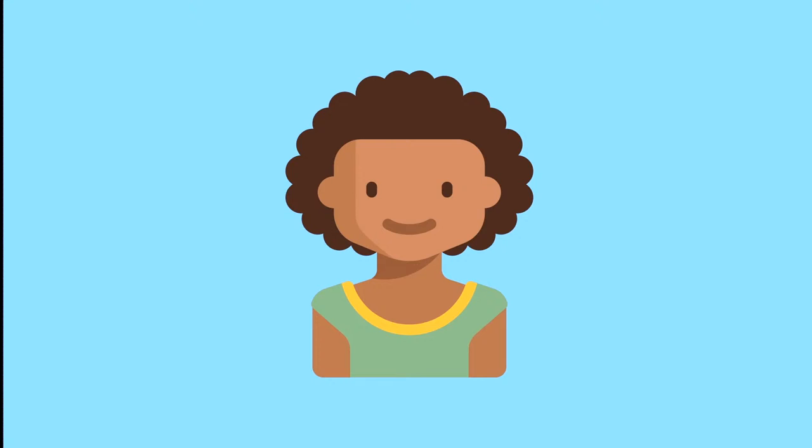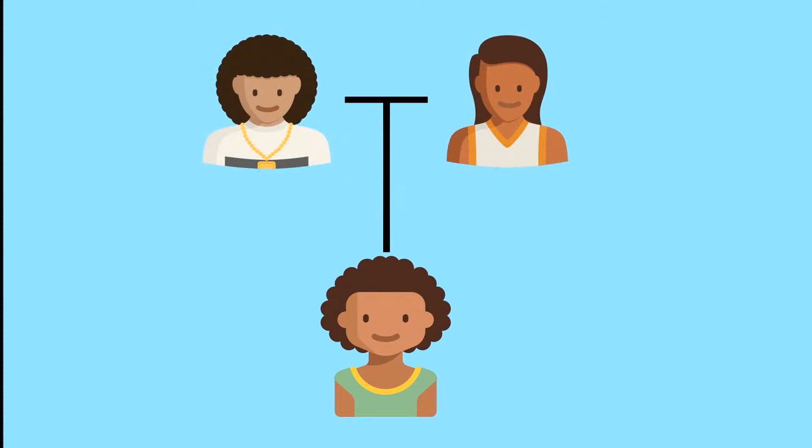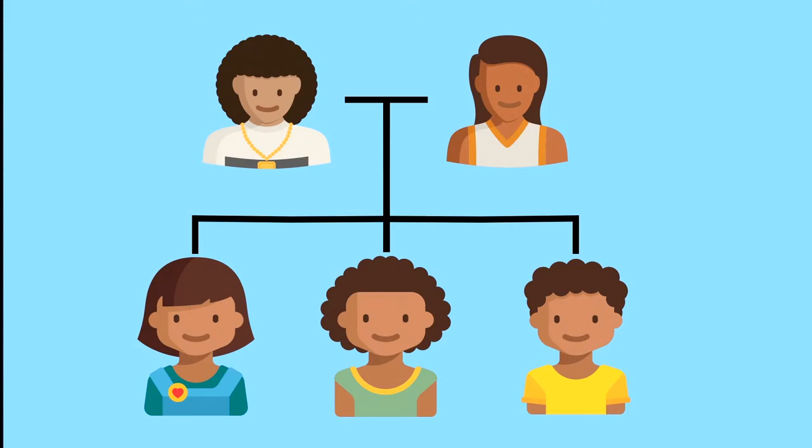Alice likes to think she's unique. Sure, she looks a little bit like her mom and a little bit like her dad and a little bit like her brother and sister, but when it comes down to it, no one else on Earth is exactly like Alice. But not all organisms can say that. Some produce offspring by literally cloning themselves. They sprout a bud or scatter spores to the wind, and those little offspring grow up to be genetically identical to the parent.